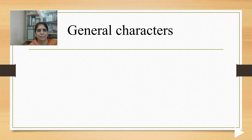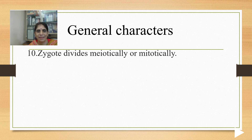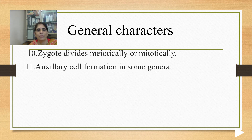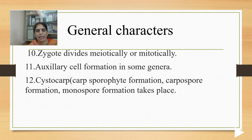As a result of sexual reproduction, the two gametes fuse to form a zygote, which divides meiotically or mitotically. We will study two orders: Nemalionales and Ceramiales. In Nemalionales the zygote divides meiotically, and in Ceramiales it divides mitotically. Auxiliary cell formation is seen in Polysiphonia. The cystocarp (carposporophyte) is haploid in Nemalionales and diploid in Ceramiales, producing carpospores accordingly. In some genera, monospore formation also takes place. All spores — carpospores or monospores — are aflagellate.